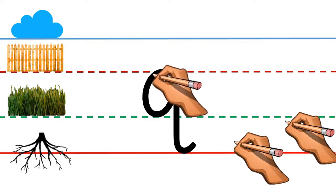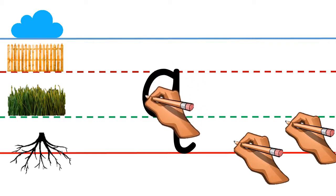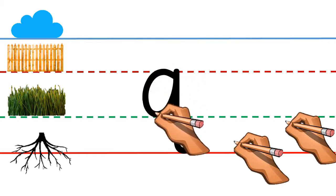Put your pencil on the fence line. Make a curve, touch the grass line, or make a semicircle.